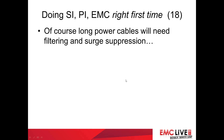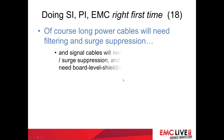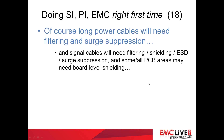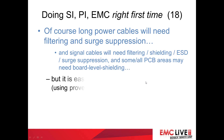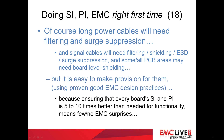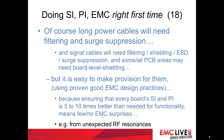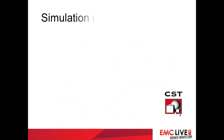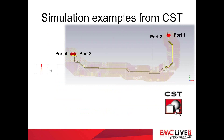Going back to this design, long power cables are going to need filtering and surge suppression. Signal cables are going to need filtering, shielding, and surge suppression. Some or all board areas might need board-level shielding. But it's easy to make provision for these using proven good EMC design practices. Ensuring that every board's SI and PI is between 5 and 10 times better than needed for functionality means you get few — maybe even no — EMC surprises, for instance from an unexpected resonance. Our simulation will find this.